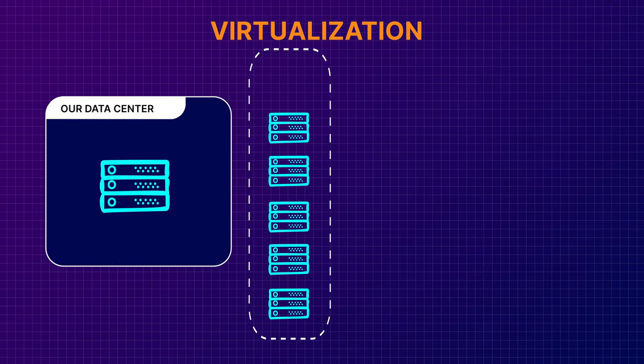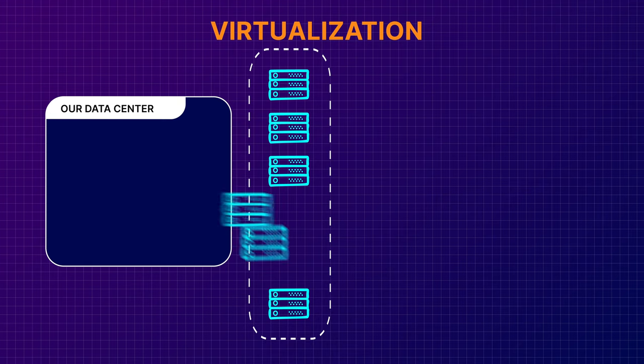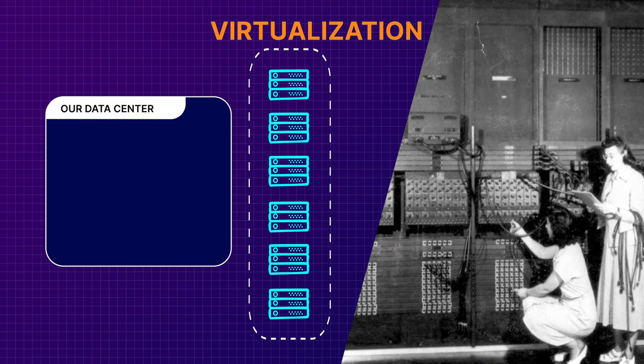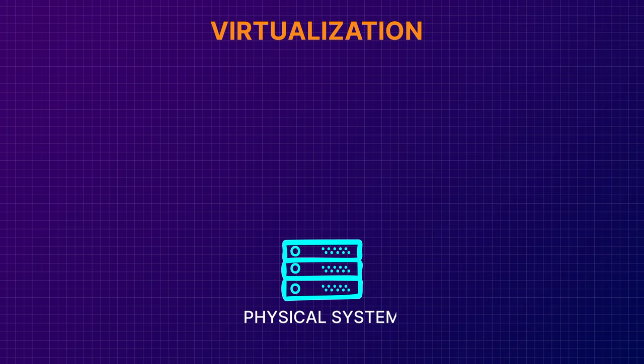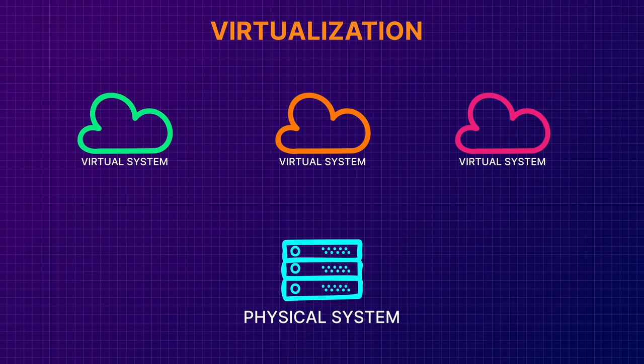Two concepts we hear frequently around cloud computing are virtualization and containerization. Cloud providers have massive amounts of computing power available for you to use in seconds — they don't have lots of people running around plugging and unplugging cables whenever you request a new system. Cloud providers make use of virtual systems, or virtualization, which means they can create complete software-based computer systems on top of physical computer hardware. When you request a system, it can be provisioned in a matter of seconds.